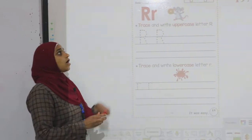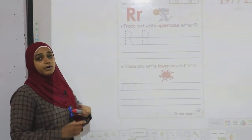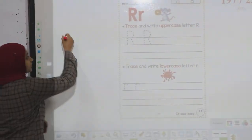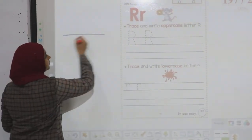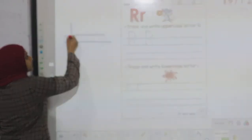The first one is R. How do I write it down? Down, stick, semi-circle, and slash.